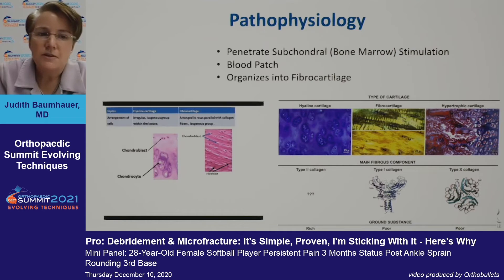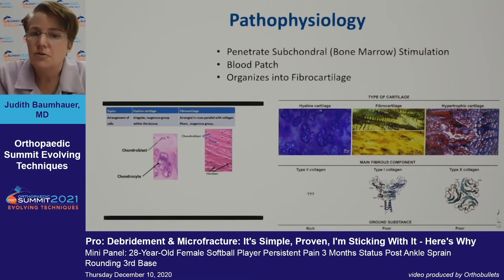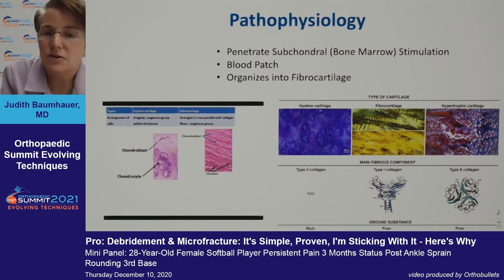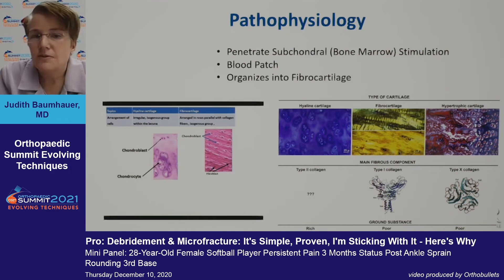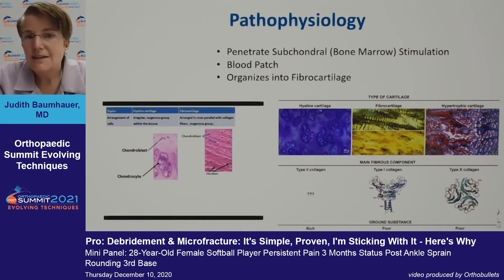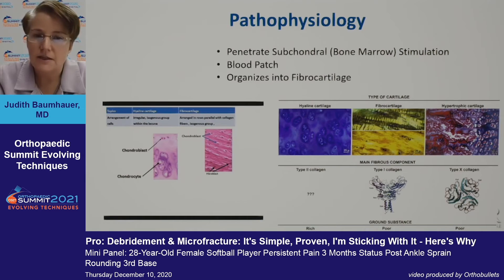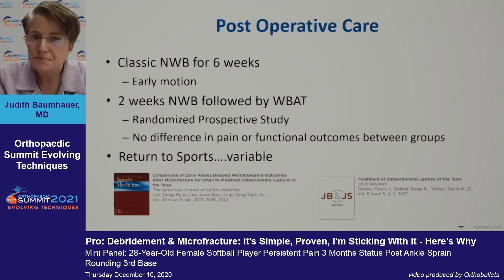What is fibrocartilage? It is different from what we started with — hyaline cartilage. Hyaline cartilage is type 2 collagen, whereas fibrocartilage is type 1 collagen. There are different cells and different ground substance or matrix associated with fibrocartilage. Because of that, it is not as biomechanically stable as the original hyaline cartilage, and that is what makes people concerned.